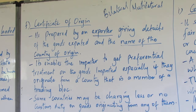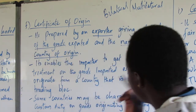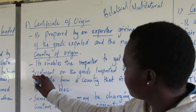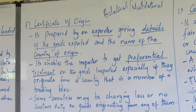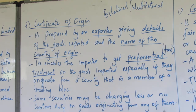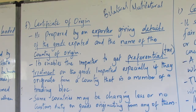When we have to give the details of goods exported and the name of the country, it enables the importer to get preferential treatment on the goods imported. Some of these preferential treatments include reduced taxes or no taxes at all on goods imported, because of those trade agreements, if they originate from a country that is a member of a trading bloc — that is, countries that have trading agreements.